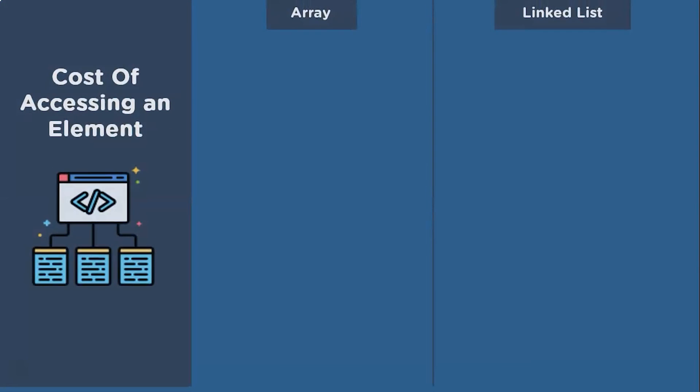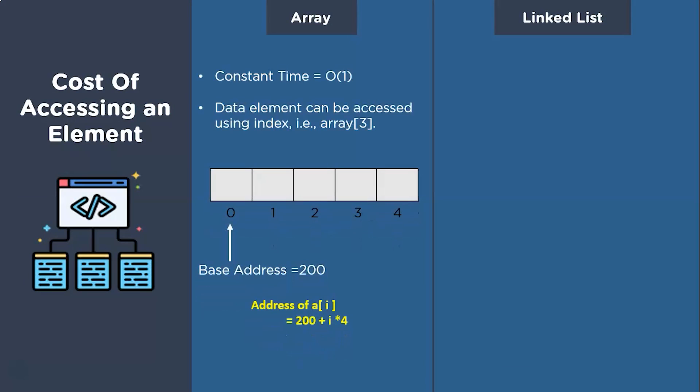The first parameter that we want to talk about is the cost of accessing an element. Irrespective of the size of an array, it takes constant time to access an element in the array. And this is because an array is stored as one contiguous block of memory. So if we know the starting address or the base address of this block of memory, we can traverse the whole array to access the element that we want. So let's say what we have here is an integer array and the base address for this is 200.